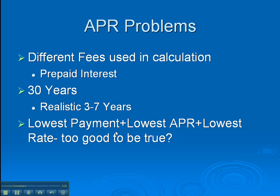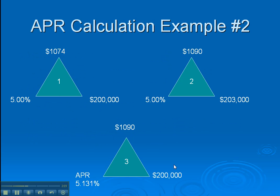Here we're going to look at an example with two loans — one that has a lower payment, a lower APR, and a lower rate, all three things. It's got to be the better loan, right? Maybe, maybe not — let's take a peek. We have a $200,000 loan at 5%; principal and interest would be $1,074. We want to calculate APR, so we add the loan fees — in this case $3,000 — keep our rate the same, and come up with a new payment of $1,090. We use that $1,090 with the original loan amount to calculate our APR, and we get an APR of 5.131%.